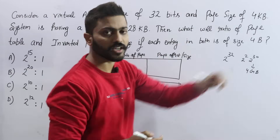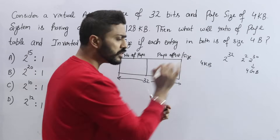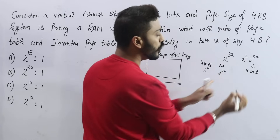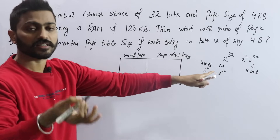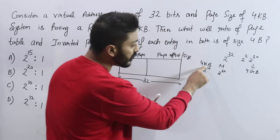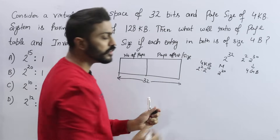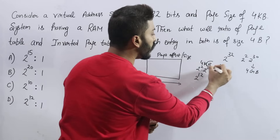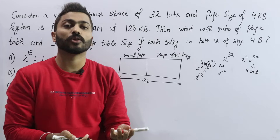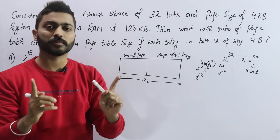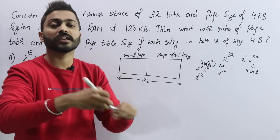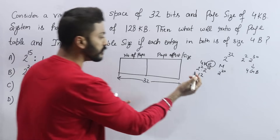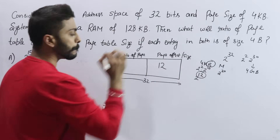Page offset or page size is 4 KB. K means 2^10, G means 2^30, and T (terabyte) means 2^40. So if we have K, that is 2^10, and 4 converts to 2^2, so total page size is 2^12 bytes. We don't need to convert bytes to bits here — memory is by default byte addressable. If it were word addressable, word size would be specified (e.g., 2 bytes or 4 bytes). Since nothing is mentioned, take 1 byte. So page offset = 12 bits.